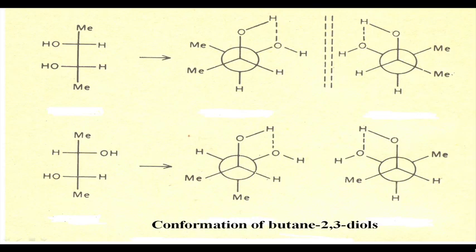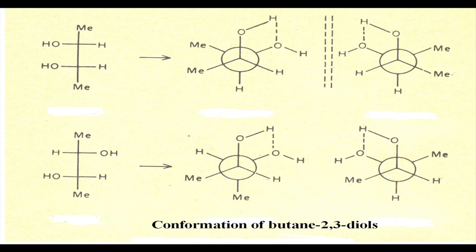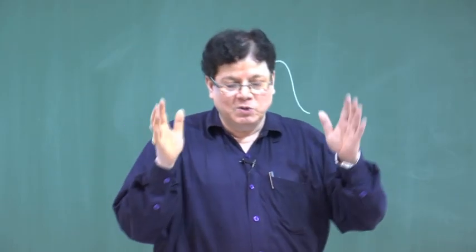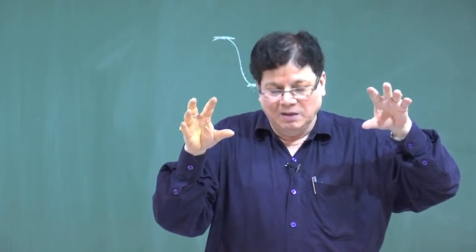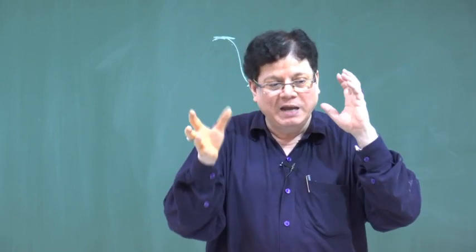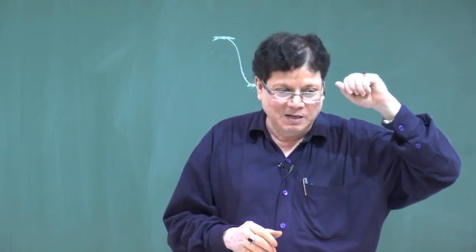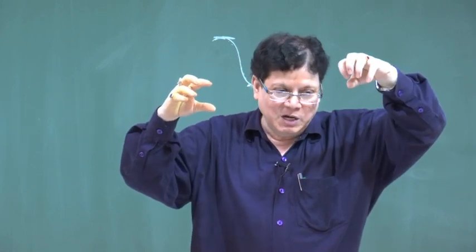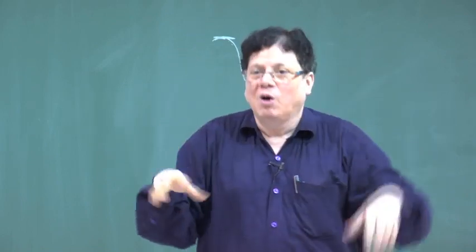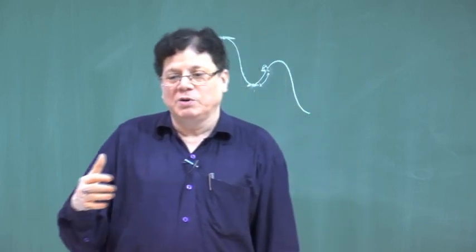It is not always true that the gauche form is less stable than the anti. Where intramolecular hydrogen bonding is possible only in the gauche form, the gauche becomes the more stable one. We have completed the conformational analysis of n-butane. Next, we will discuss systems where dipole-dipole repulsion takes place — cases where groups have partial negative charges and repel each other.